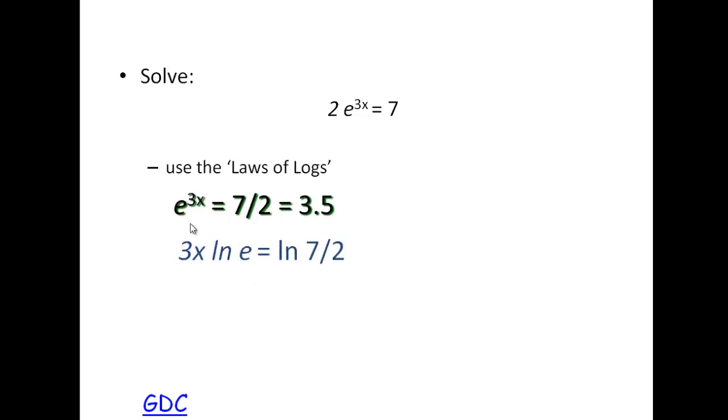If we then natural log both sides we get ln e to the 3x equals ln 7 over 2. We then take the power in front using the third log rule.